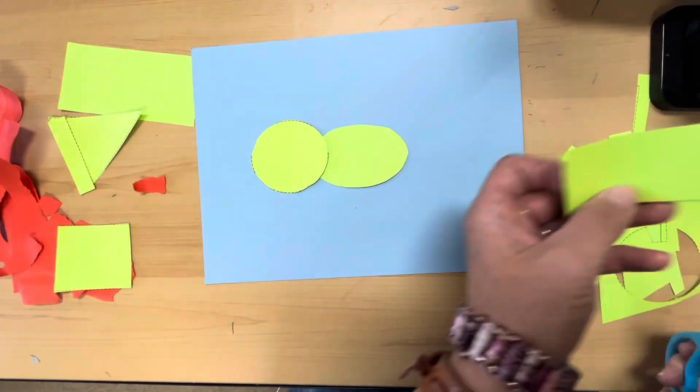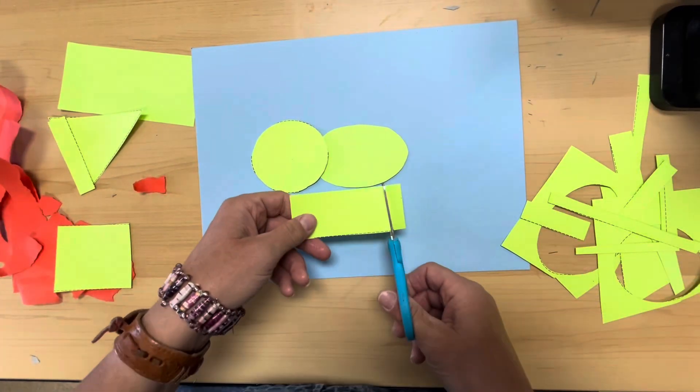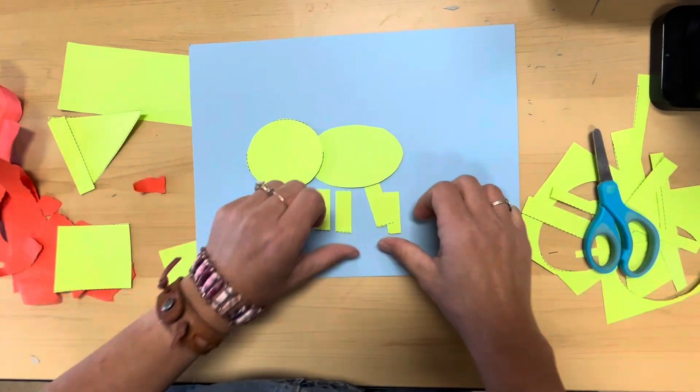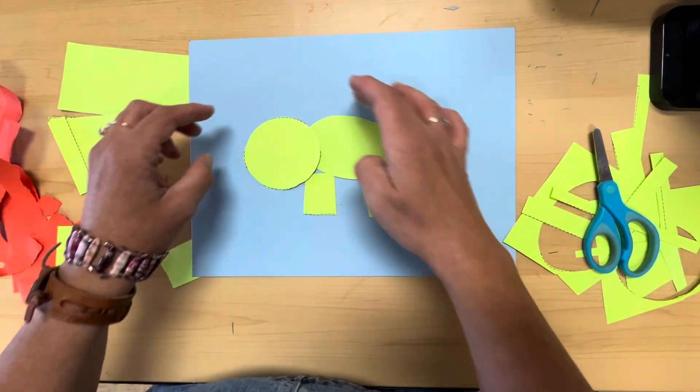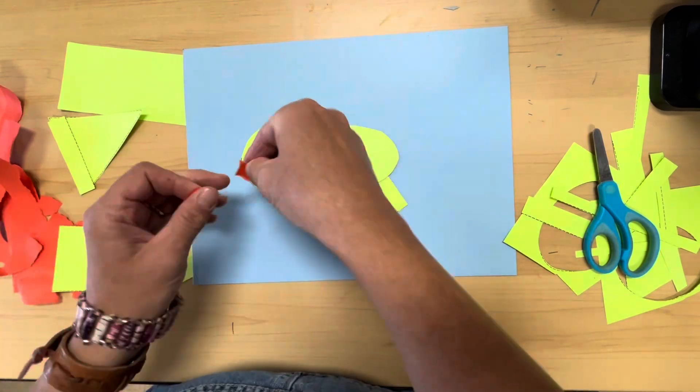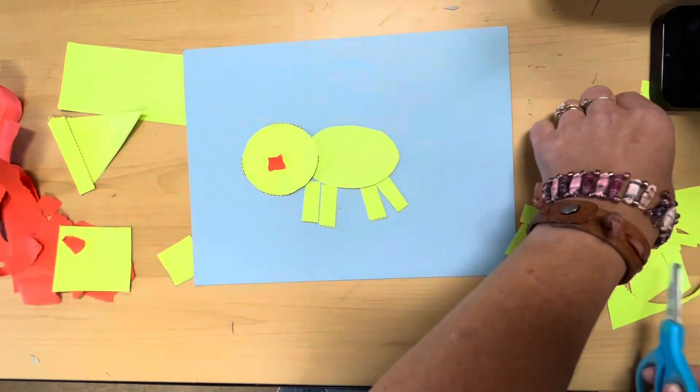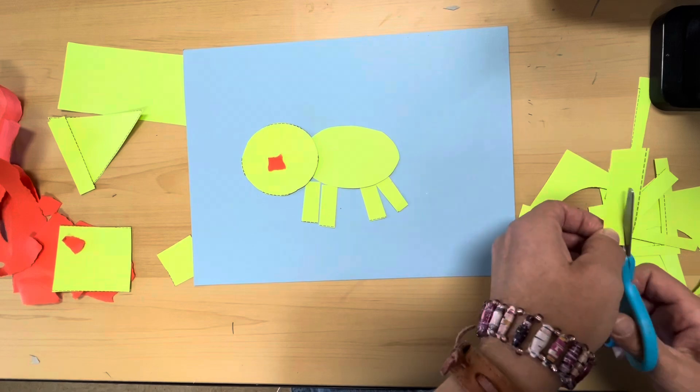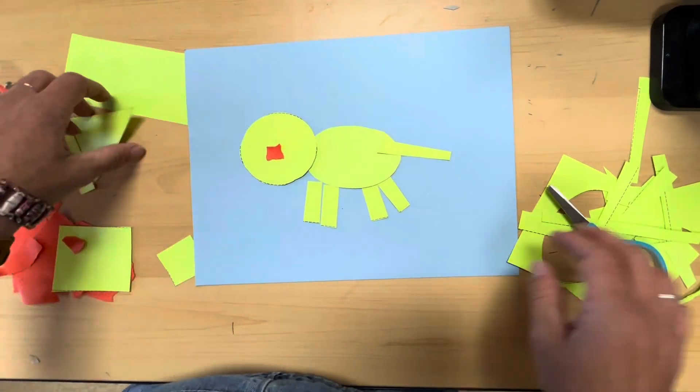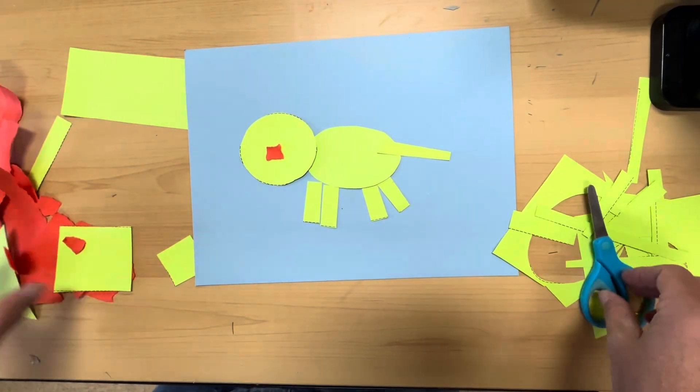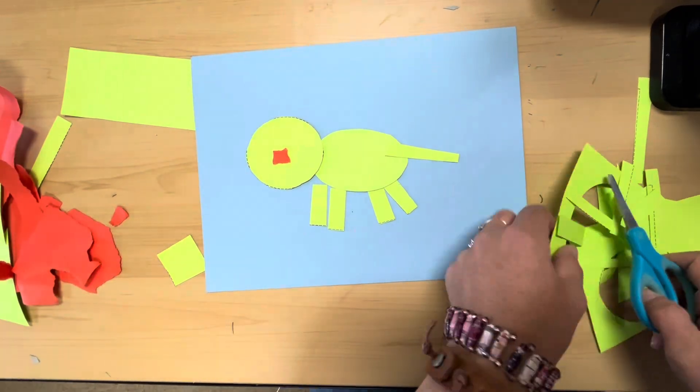All I have to do is cut up one of my scraps to make legs. And there's a nose. I can use crayons later to draw the eyes. And I have an animal. I could add big ears to make a dog. I could add little ears to make a cat.